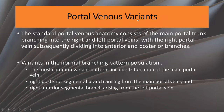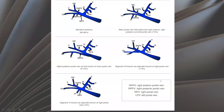Portal venous variants. The standard portal venous anatomy consists of the main portal trunk branching into the right and left portal vein, with the right portal vein subsequently dividing into anterior and posterior branches. The most common variation is the trifurcation of the portal vein, where the right posterior segment arises from the main portal vein and the right anterior segment arises from the left portal vein. This sketch illustrates the variation of the portal venous system; the standard anatomy is present in about 65 to 80% of cases.